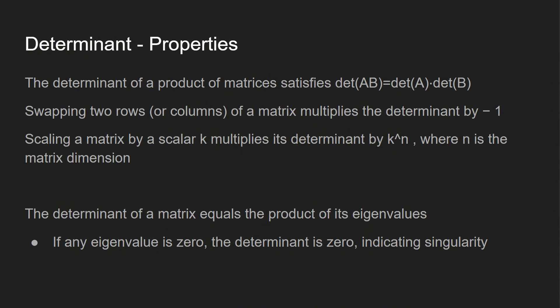Here are a few properties worth mentioning. The determinant of a product of matrices satisfies: det(A × B) = det(A) × det(B). Swapping two rows or columns of a matrix multiplies the determinant by negative one. Scaling a matrix by a scalar K multiplies its determinant by K raised to the N power, where N is the matrix dimension. Also, the determinant of a matrix equals the product of its eigenvalues, and if any eigenvalue is zero, the determinant is zero, which indicates singularity — and there will be no inverse.